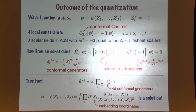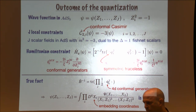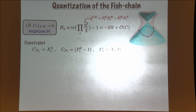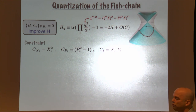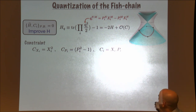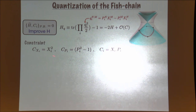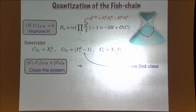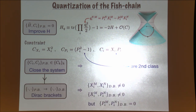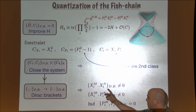Let me now describe the main ingredients of the quantization and how quantizing this model led us to this AdS description. The first step was to improve the Hamiltonian. It turns out that if one takes the trace of these Q-squares at the classical level, they are equivalent to the original classical Hamiltonian plus higher powers of the constraints — so on the constraint surface they are equivalent. The constraints are: x^2=0 (on the light cone), p^2=1 (gauge fixing). The next thing is to close the system of constraints, and we find these two constraints are second order while the third is first order. This means we have to introduce Dirac brackets, where importantly the X's do not commute anymore.